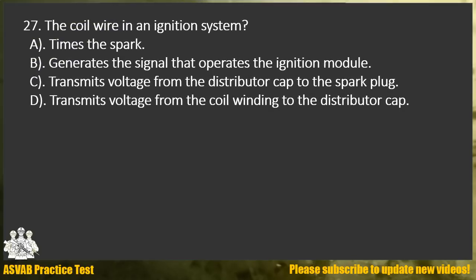Question 27. The coil wire in an ignition system: A. Times the spark. B. Generates the signal that operates the ignition module. C. Transmits voltage from the distributor cap to the spark plug. D. Transmits voltage from the coil winding to the distributor cap.